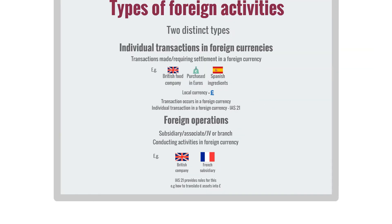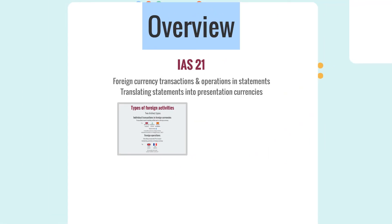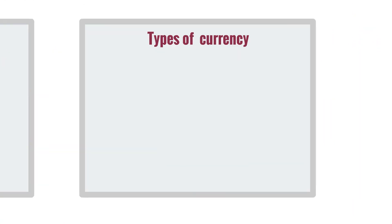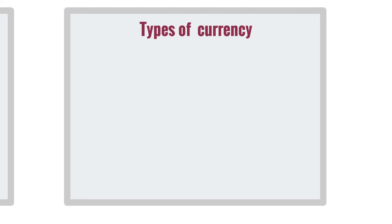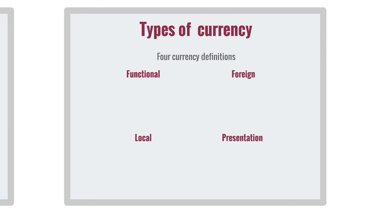Before we get on to that, we have a few more definitional aspects to look at. According to IAS 21, there are four different types of currency definition that we need to know about, and they're all fairly simple. We have functional currency, foreign currency, local currency, and presentation currency.